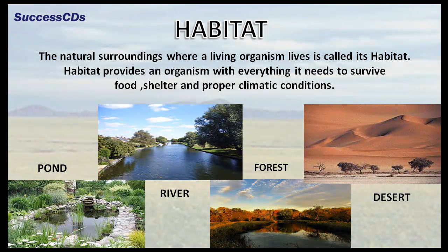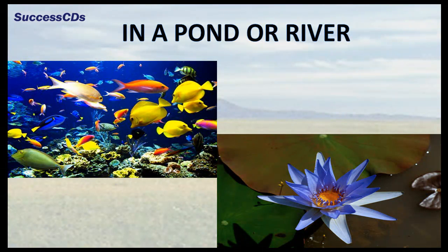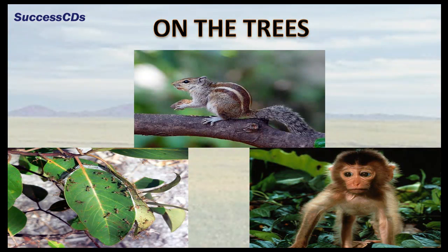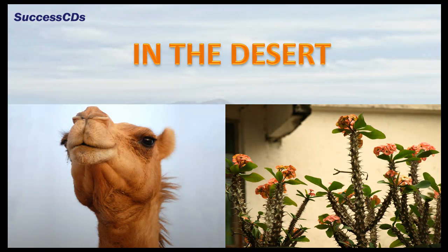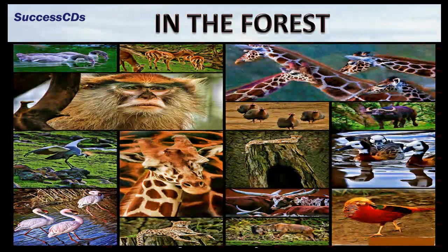Ponds, rivers, forests, and deserts are some of the habitats. You will find animals like fish and plants like lotus living in a pond or river. Ants, squirrels, and monkeys living on trees. Animals like camel and thorny plants in deserts. And in a forest, we find a number of animals like giraffe, deer, lions, birds, snakes, etc., and also a number of trees.